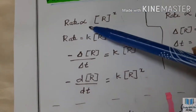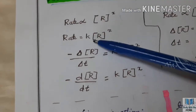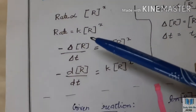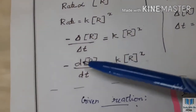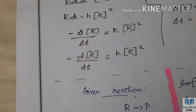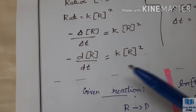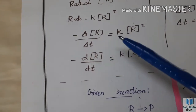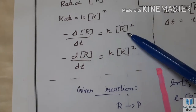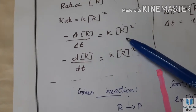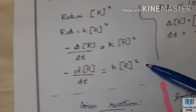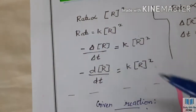This is k. The rate is expressed as minus delta concentration of reactant divided by delta t, equal to k. The concentration of the reactant is raised to some power, that is the power of x.